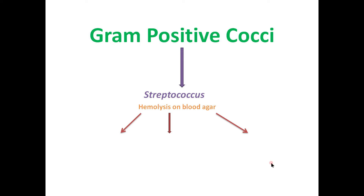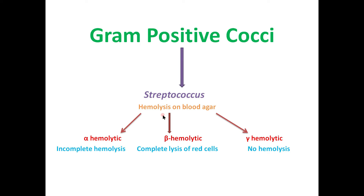On the basis of hemolysis on blood agar, the streptococci are classified — hemo means blood and lysis means breakdown, so we use blood agar to look at hemolysis. They are further classified into three important groups: alpha hemolytic, beta hemolytic, and gamma hemolytic. Alpha hemolysis means incomplete or green hemolysis, beta hemolysis means complete lysis of RBCs, and gamma hemolysis means no hemolysis. If there is complete lysis of the RBCs there is a clear zone, and if there is incomplete hemolysis we can see a green color zone.